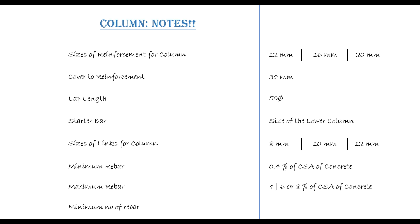The last thing under column notes is the minimum number of reinforcement bars. For any column size there is a minimum number you can provide. If your column is rectangular or square — four-sided — the minimum reinforcement you have to provide is four bars. The minimum number equals the number of edges: four sides means four bars, five edges means five bars. If your column is circular, the minimum number of reinforcement you have to provide is six.